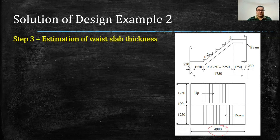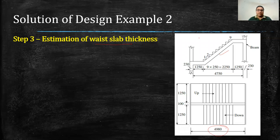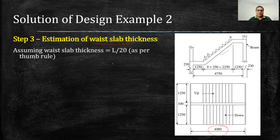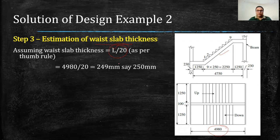Now in the next step, we will estimate the waist slab thickness. As mentioned in the previous part, generally in the case of a simply supported slab, the thickness of the slab can be taken as L by 20. So as per thumb rule, it is L by 20. L we have already calculated, which is the effective span divided by 20. With this, we get the thickness of waist slab as 249 mm, say 250 mm.